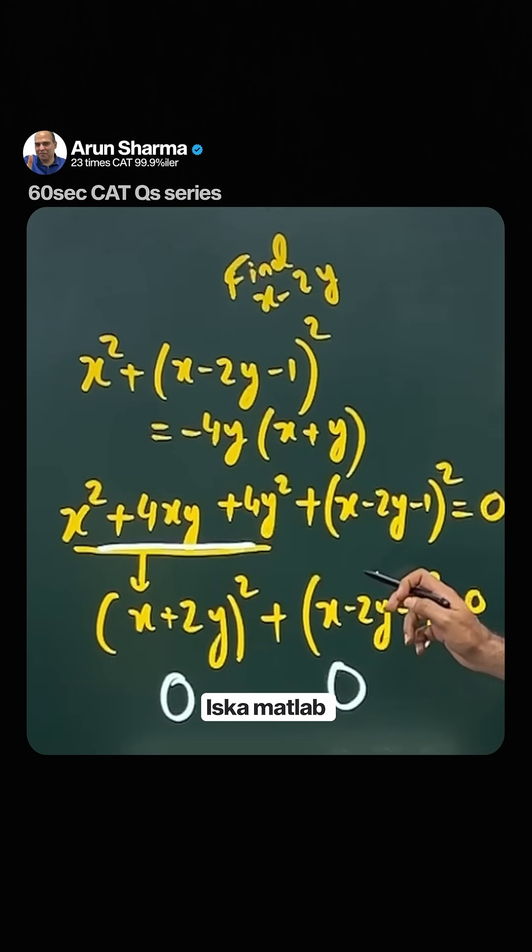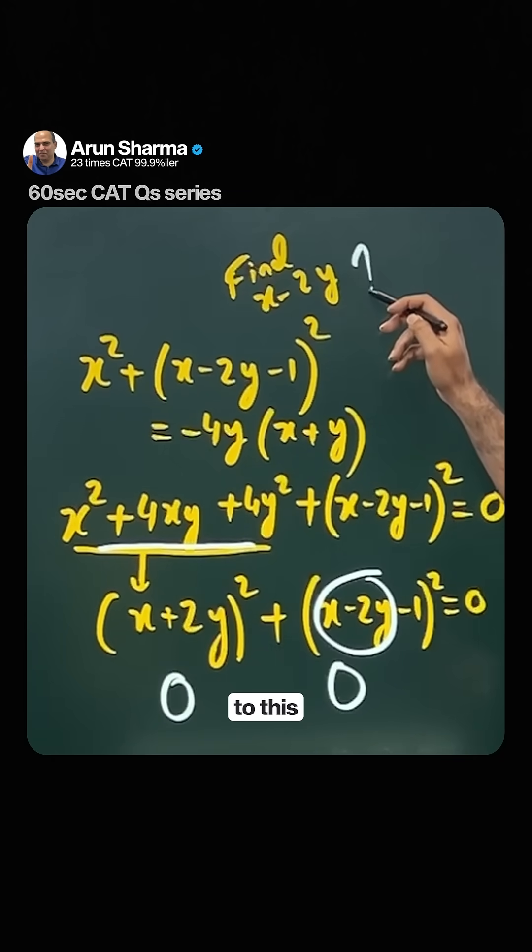And if this expression is 0, it means that x minus 2y is 1. And that's the answer to this question.